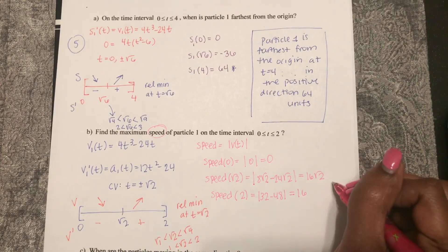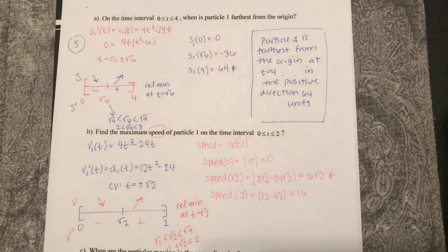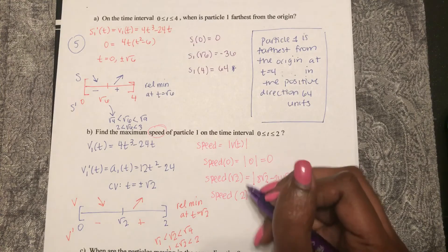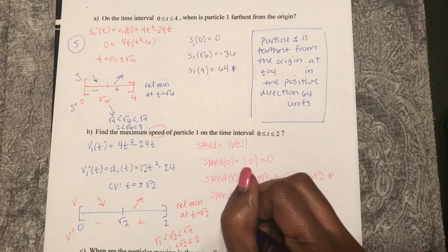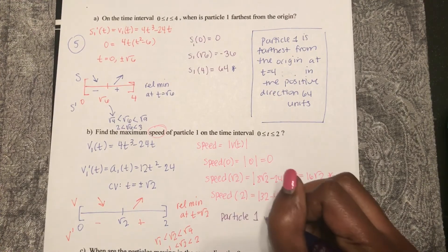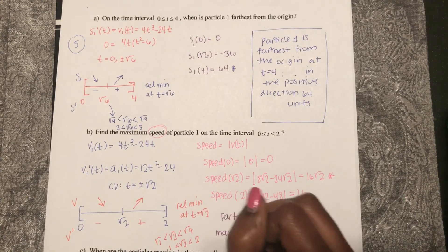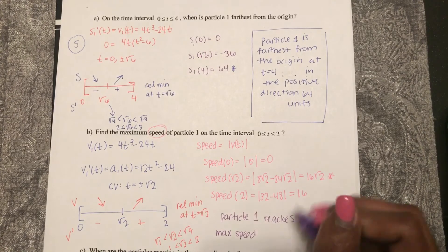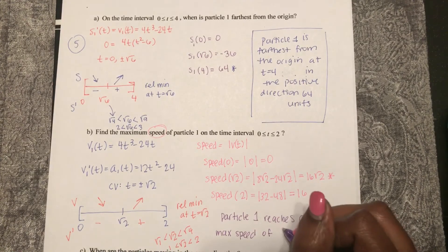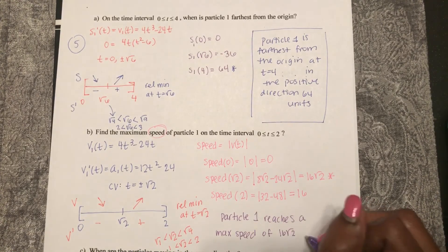So here is my maximum speed. Particle one reaches a maximum speed of 16 square root two.